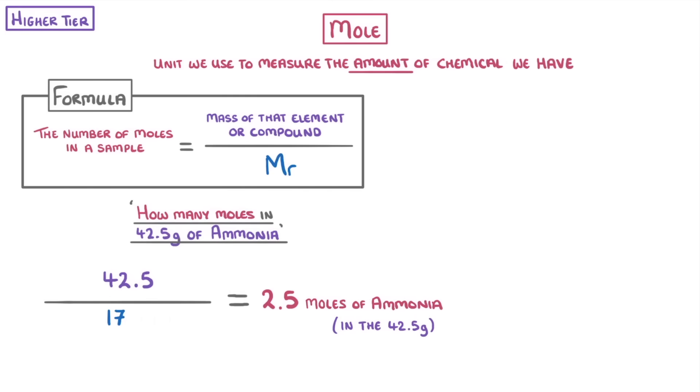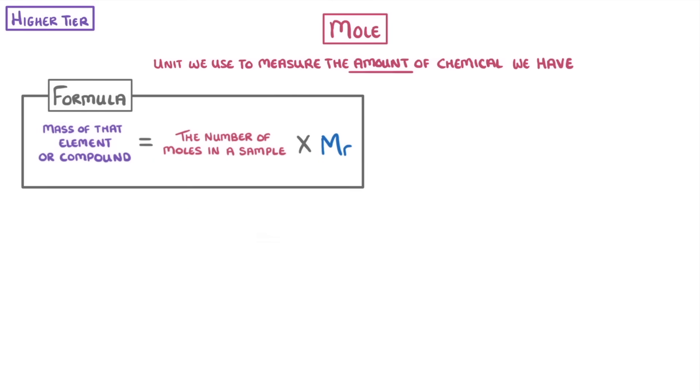We can also rearrange the formula to find the mass if we were given the number of moles. For example, what's the mass of 3 moles of carbon dioxide? Well, this time we'd multiply our 3 moles by the MR of CO2, which is 12 plus 2 times 16, so 44, which gives us 132 grams of CO2.